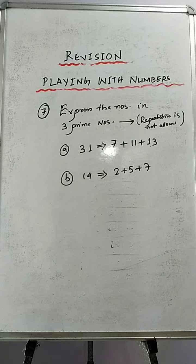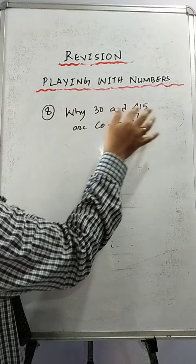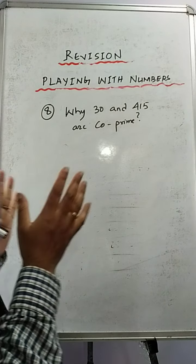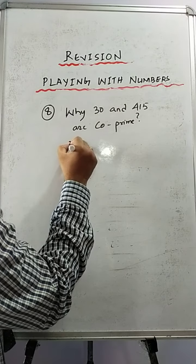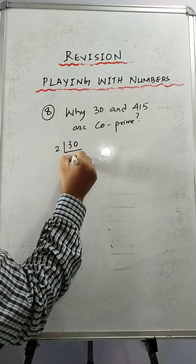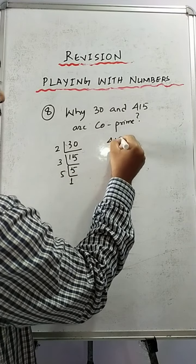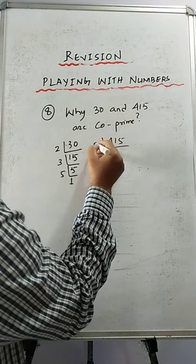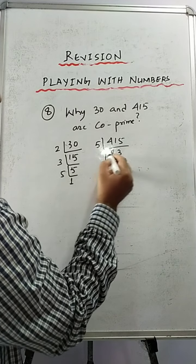Now let's move on to the last sum, sum number 8 — the last question and a very interesting one. It will carry one mark. Why are 30 and 415 co-prime? Co-prime — what is the meaning of co-prime? The numbers which share only 1 as a common factor. So we have to do the prime factorization. For 30: 2 times 15, 3 times 5, 5 times 1. Now we have to do the same thing with 415. Is it divisible by 3? 4 plus 1 is 5 — no, not divisible by 3. Then 5: 5 times 83 is 415.